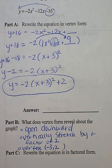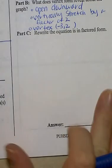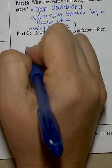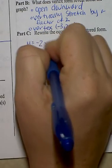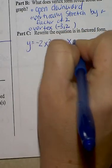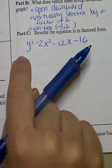I'm going to take the same original equation we were given up above. It was in standard form. And now you're asked to rewrite it in factored form. So the original equation was y equals negative 2x squared minus 12x minus 16. It does not say to solve. It just simply says rewrite it in factored form.